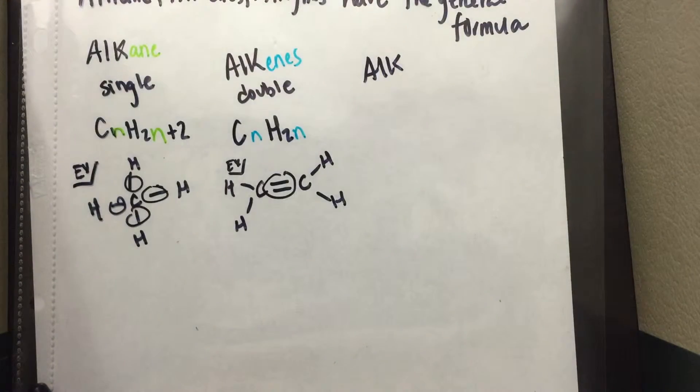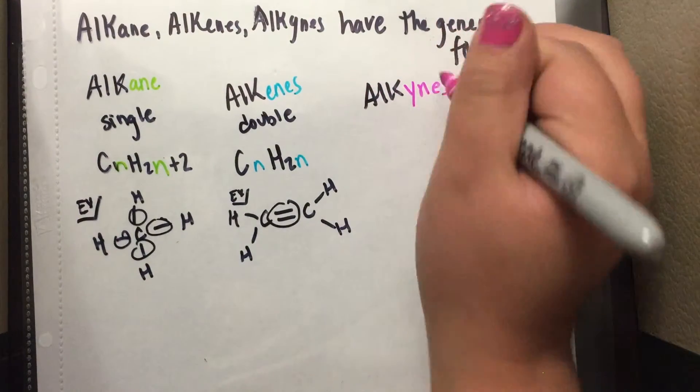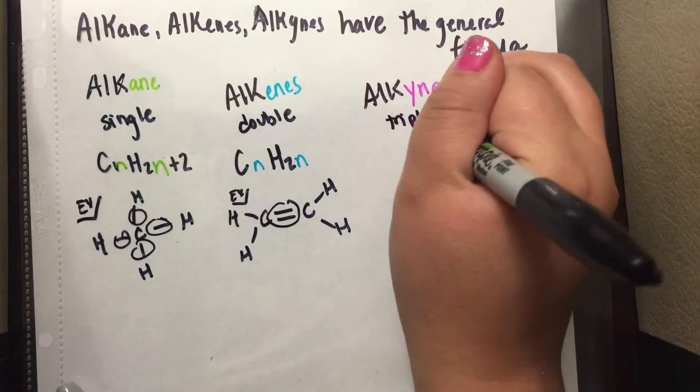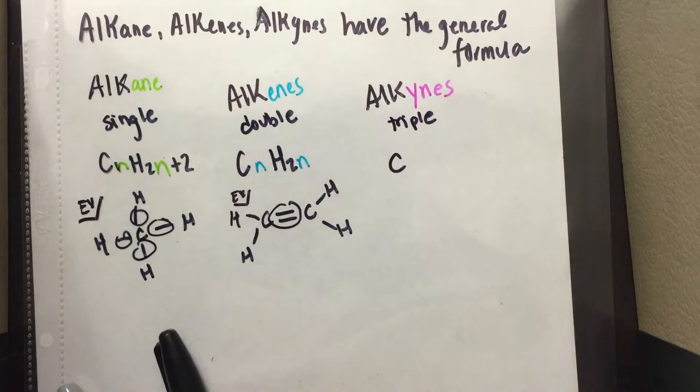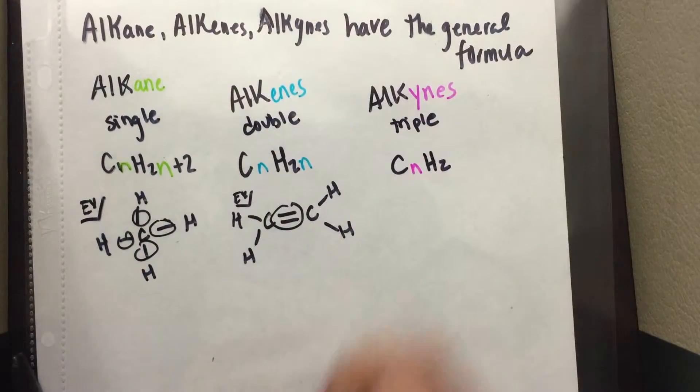And last, we have the alkynes. These are triple bonds, and they have a formula of CnH2 times N minus 2.